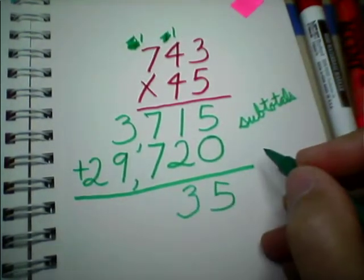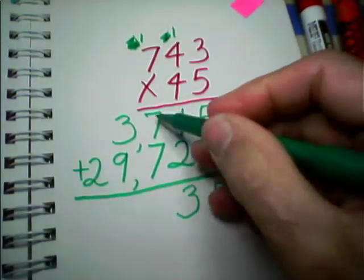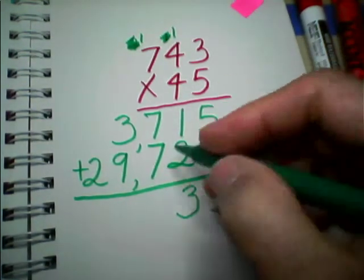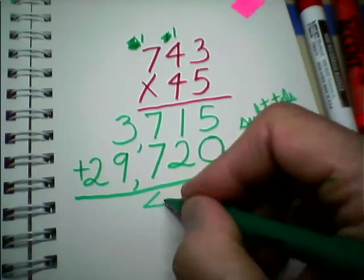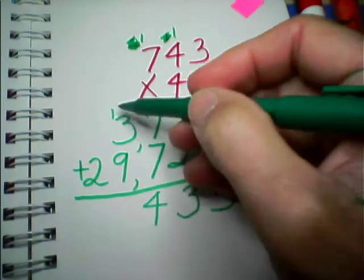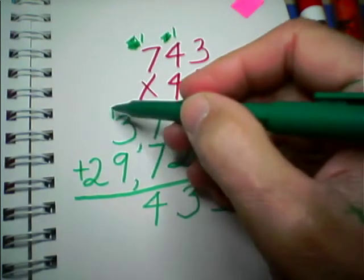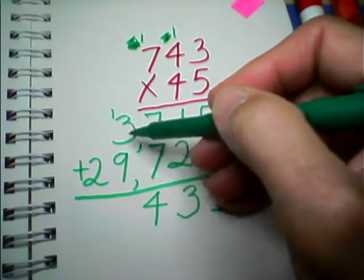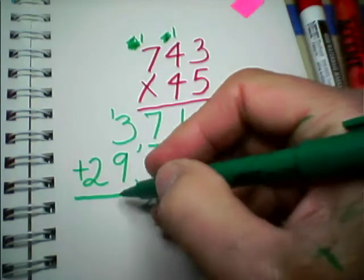I think this should be my last problem today. Nothing to carry. 7 plus 7 is 14. So, we write down the 4. We carry the 1, and since it's addition, we don't give it a rest. We add it right into the 3. 1 plus 3 is 4. 4 plus 9 is 13.